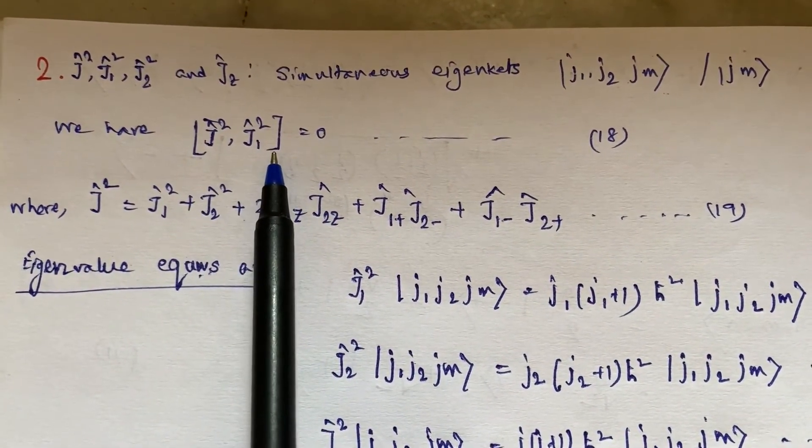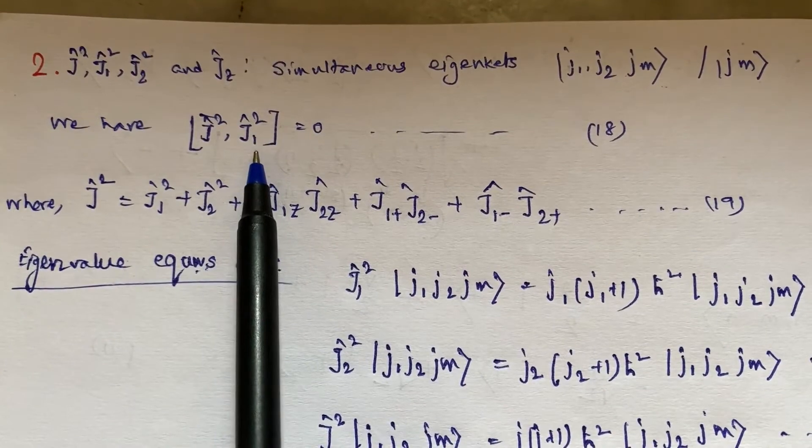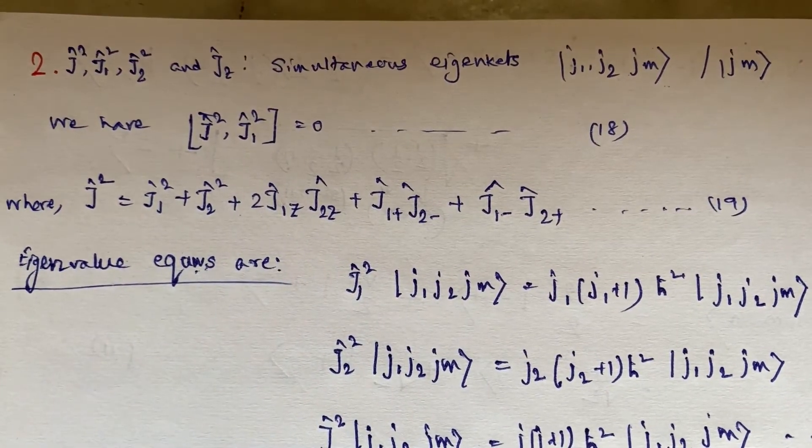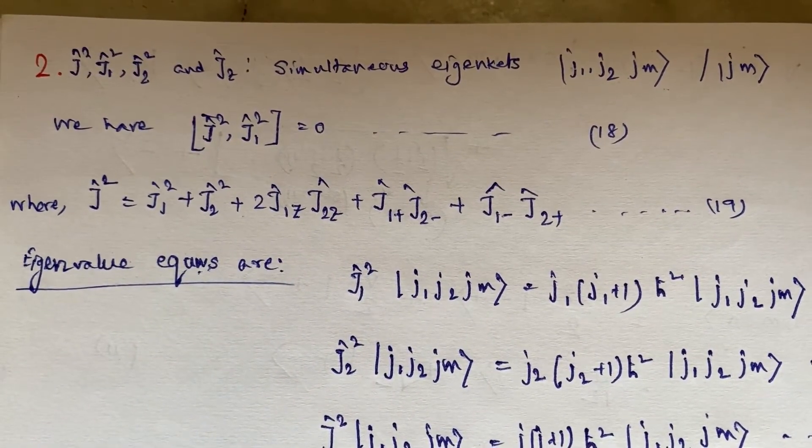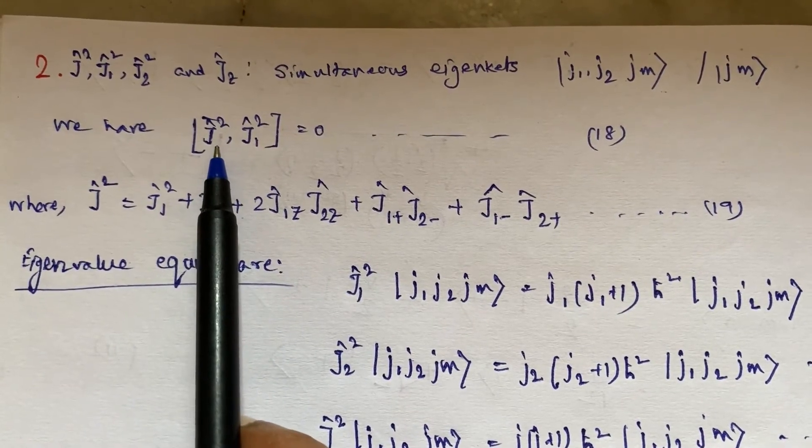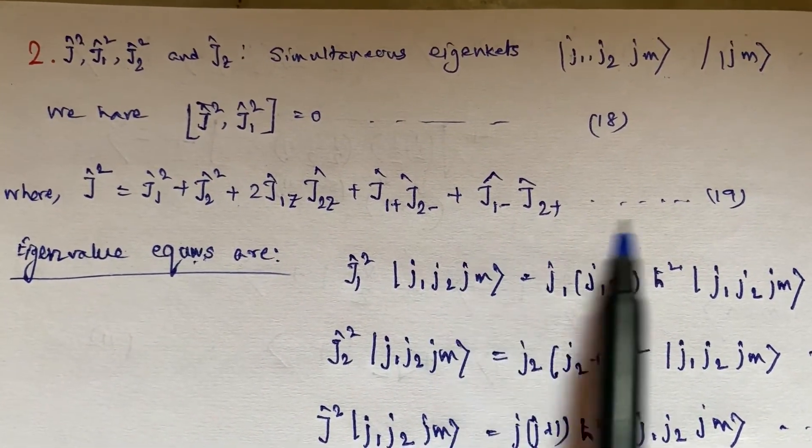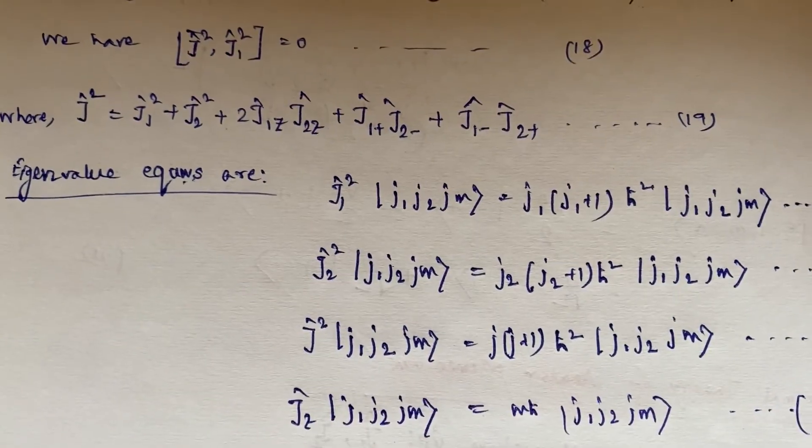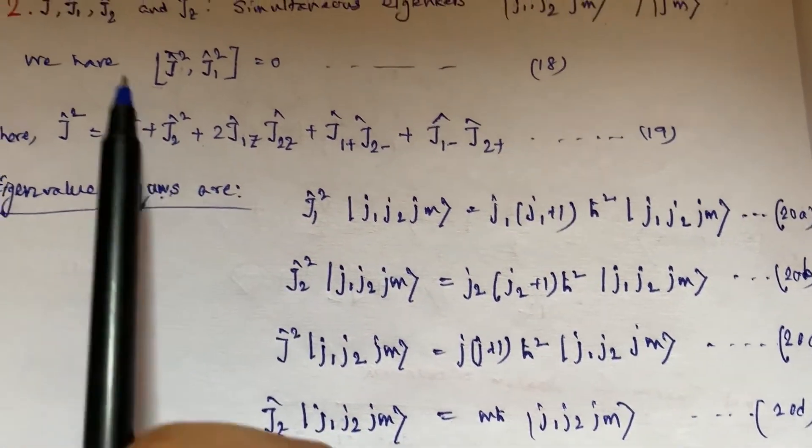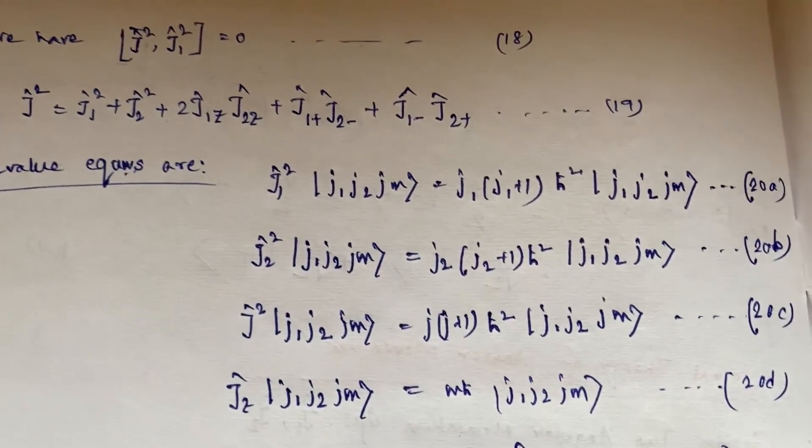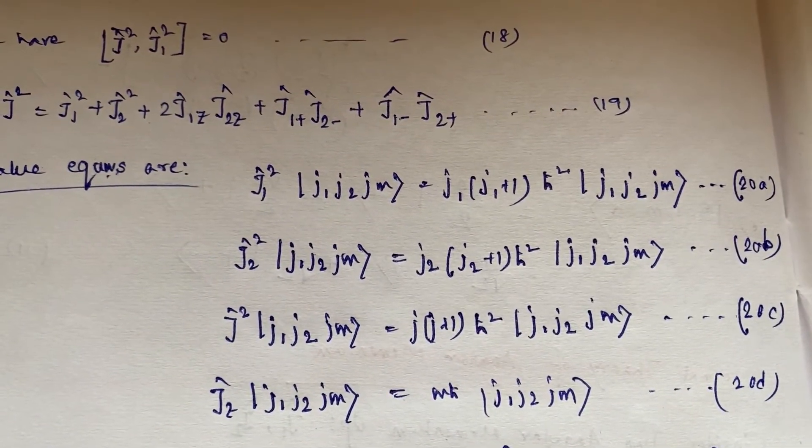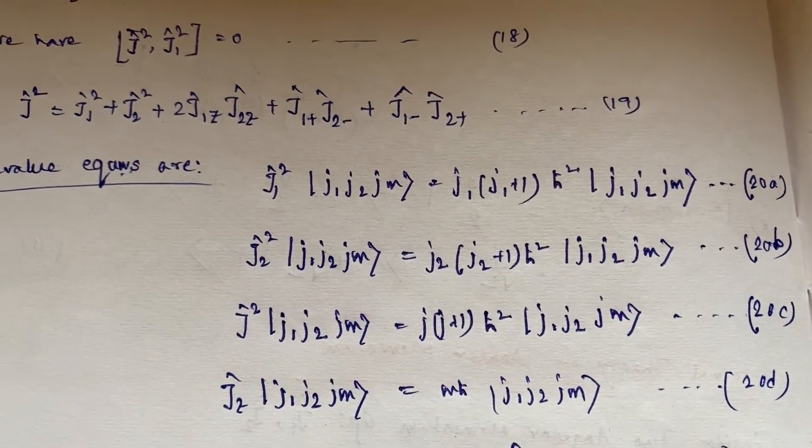This is a general relation we have proved in my angular momentum playlist series, you can check this out. This J² equal to this one, and the eigenvalue equations for all these four operators are given by equation 20a, 20b, 20c, and 20d.